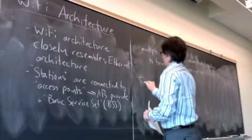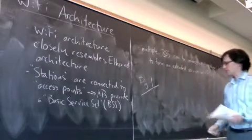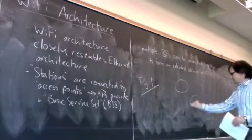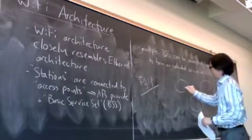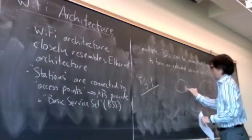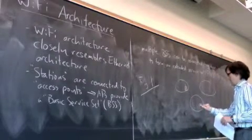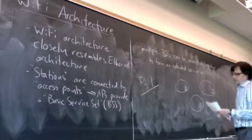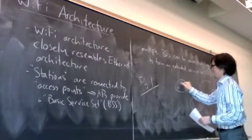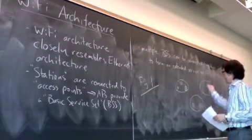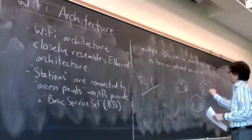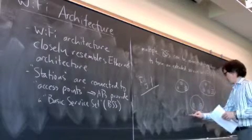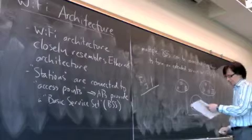So here's figure one. So a typical Wi-Fi network might look like this. We'll have a bunch of coverage areas. Each coverage area has an access point. Within each access point, we have a bunch of stations that communicate with the access point.